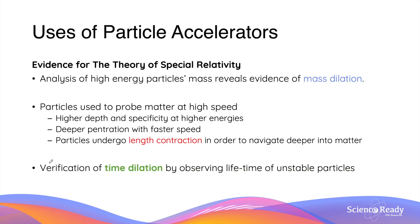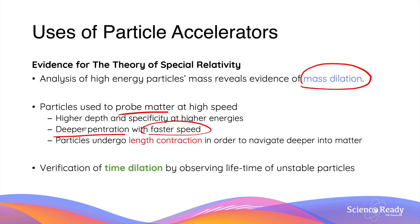Besides the standard model of matter, particle accelerators also provided evidence to support the theory of special relativity. By analyzing the high energy and mass of particles, we have revealed evidence of mass dilation — showing that particles do in fact gain mass as they reach speeds near the speed of light. High-speed particles are also used to probe matter, and this has allowed us to show that particles achieve deeper penetration into materials the faster they are travelling. This is indirect evidence for length contraction, which is a consequence of special relativity.